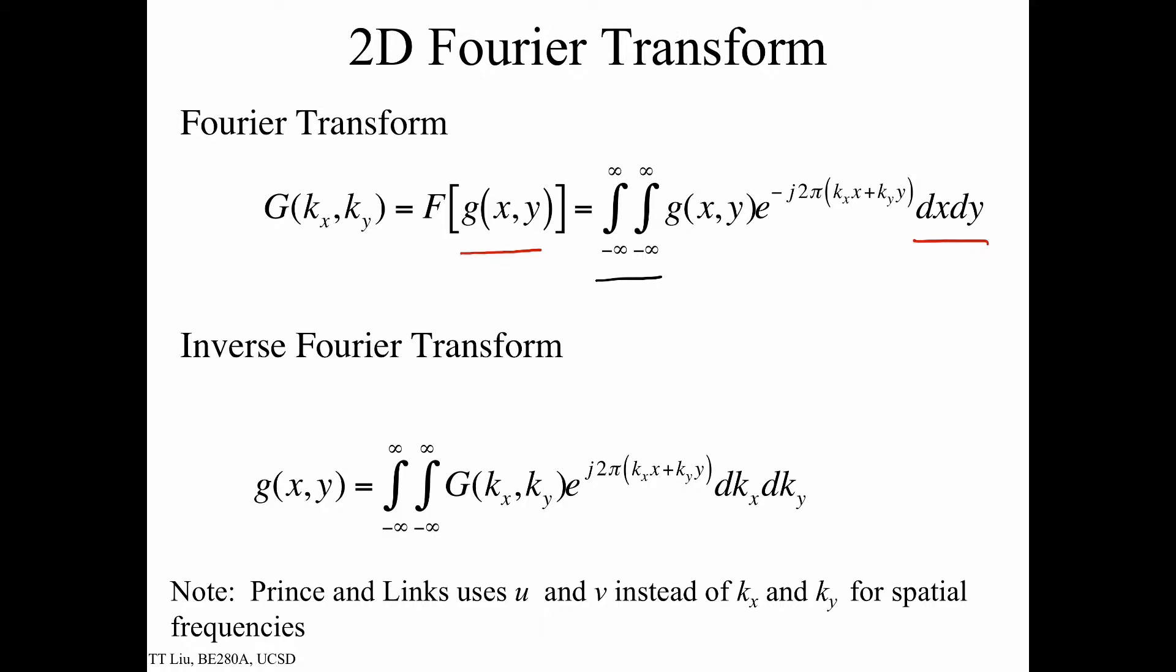We once again take our function, in this case we multiply it by a complex exponential that's now a function of both x and y, and we have spatial frequencies kx and ky. The output then is denoted as capital G of kx and ky, and we can also use this notation as Fourier transform of a function g.